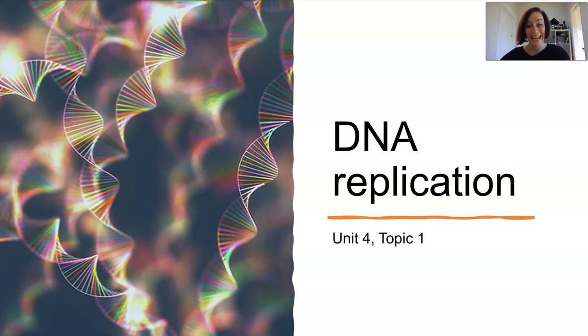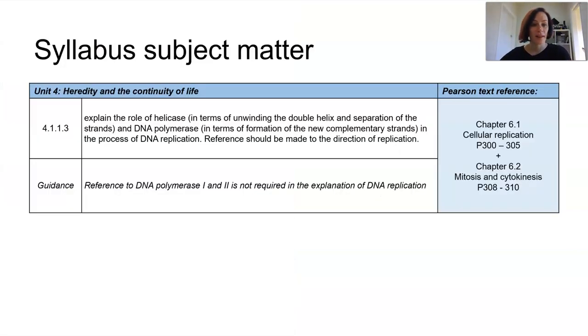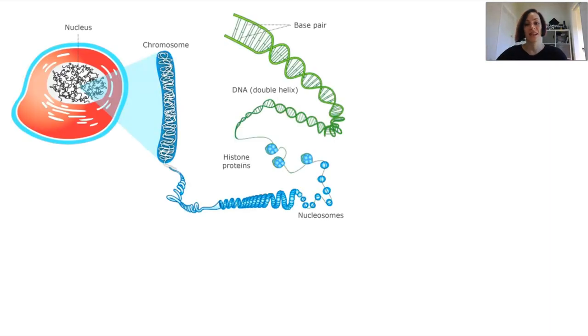In this lesson we're looking specifically at DNA replication, which is part of cellular replication as well. DNA is the master code which decides the structure and function of every single cell in an organism. So it carries all the information needed for new cells, new generations of offspring as well.